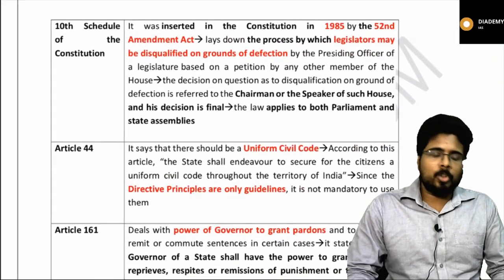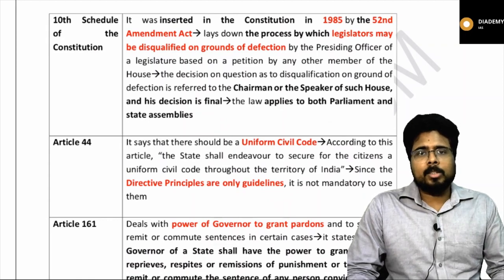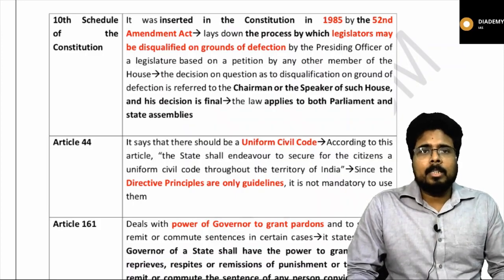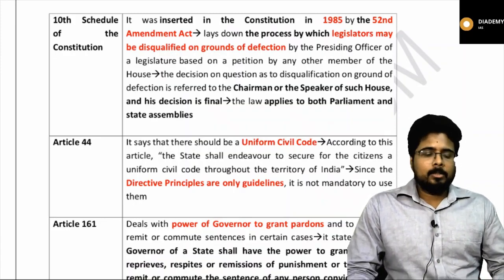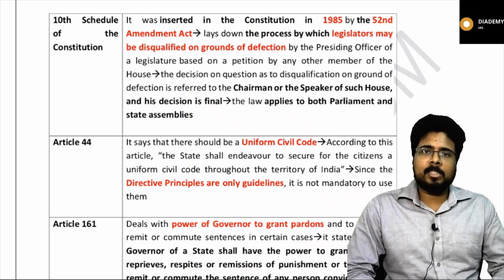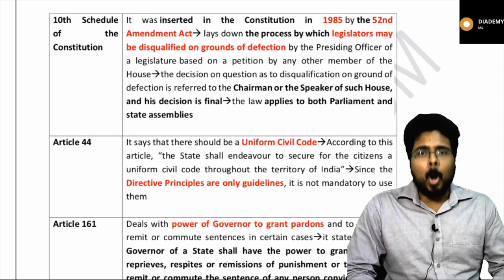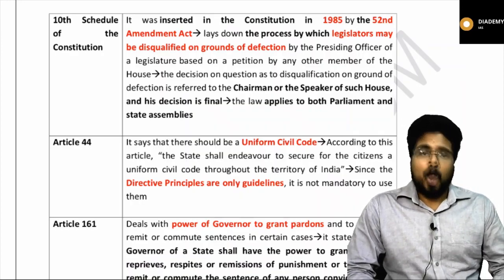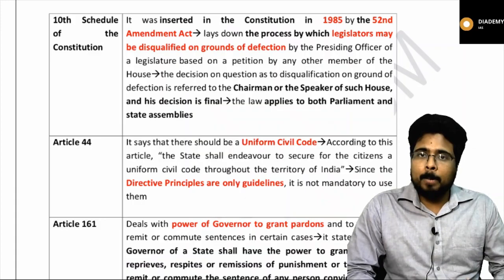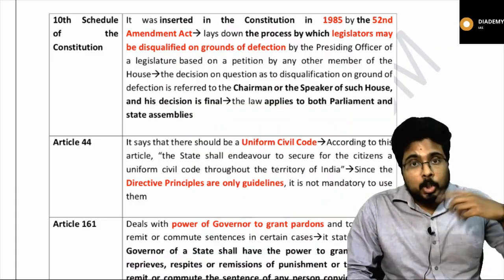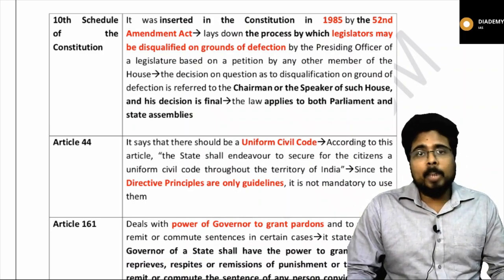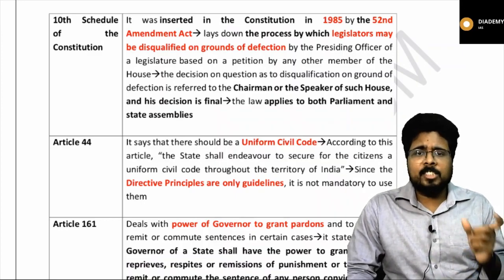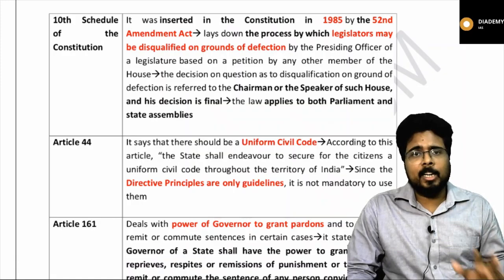The Tenth Schedule of the Constitution was inserted by the 52nd Amendment Act. It talks about the anti-defection law, which provides grounds for removal of a candidate by the Speaker. If any person goes against the party's wishes, resigns from the political party from which he was elected, joins another political party, or if an independent person joins a political party, or a nominated person does not join a political party, then he can be removed. The Speaker has the final authority to decide what constitutes defection.